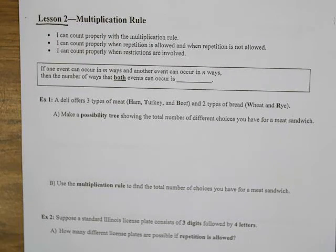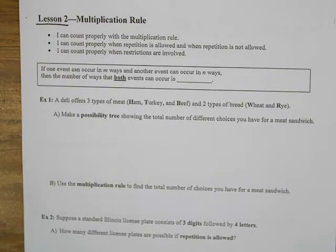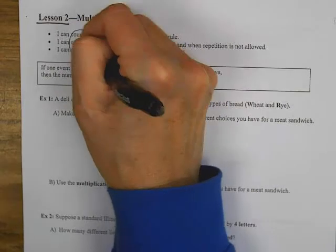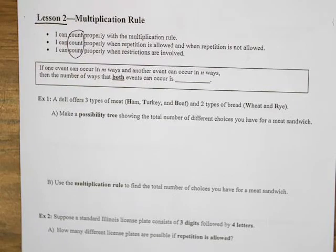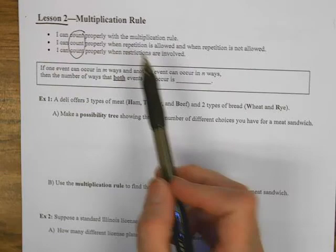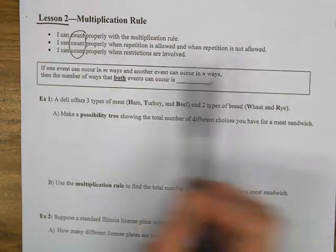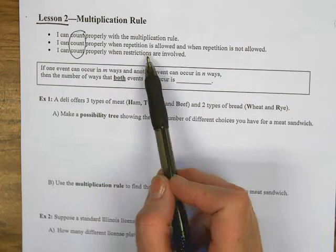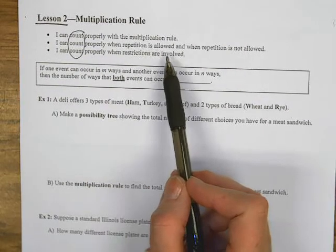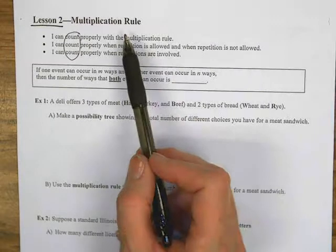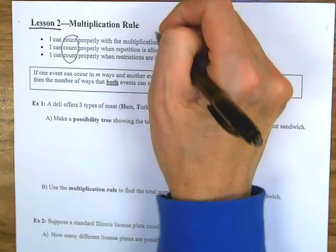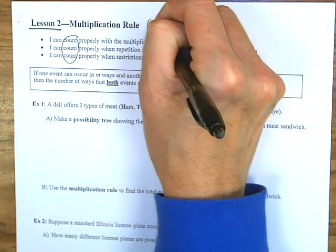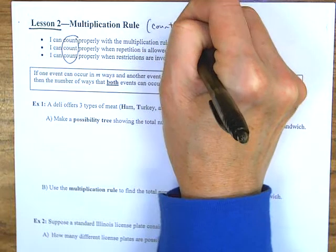Lesson number two in our unit deals with the multiplication rule. If you glance at the targets, this really has to do with being able to count. I can count properly with the multiplication rule, I can count properly when repetition is allowed and not allowed, and I can count properly when restrictions are involved. Basically, this is a rule that's going to allow us to count possibilities.